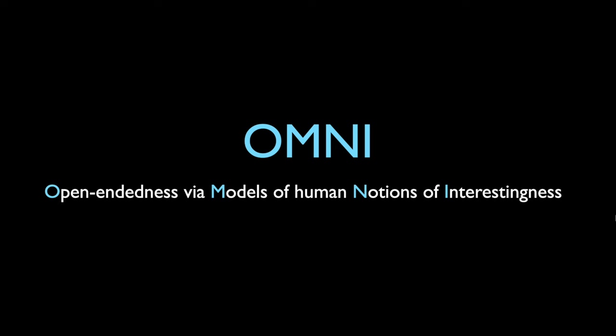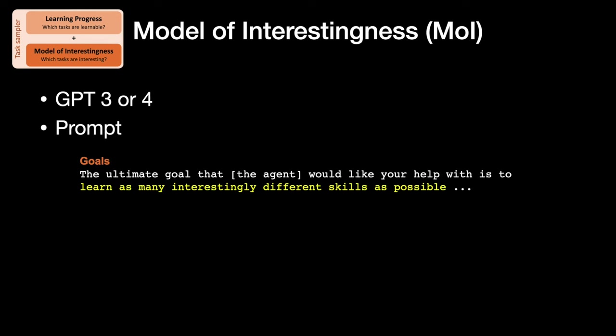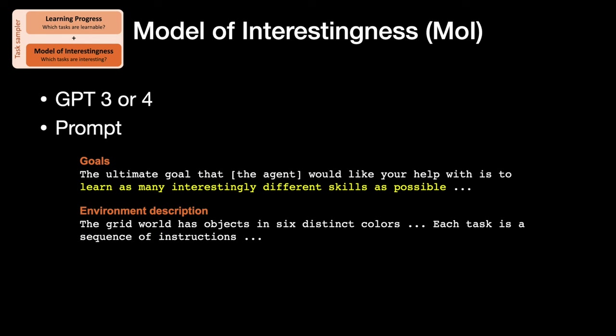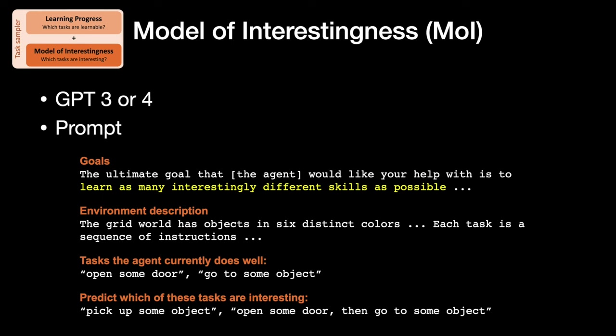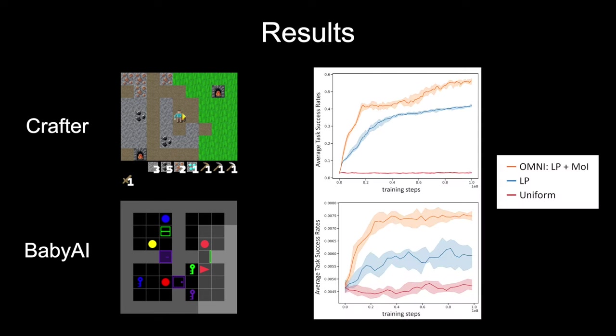For the learning progress part, we use an algorithm from my team at OpenAI from 2021. For the model of interestingness, we just asked GPT-3 or GPT-4. In the prompt, we give it the overall goal — to learn as many interesting tasks as possible — a description of the environment, the tasks it can currently do well, and ask what would be the next most interesting tasks to learn. We tested two domains: a 2D Minecraft world and BabyAI. Uniform sampling performs terribly; learning progress does much better; but OMNI does best by adding the interestingness model.